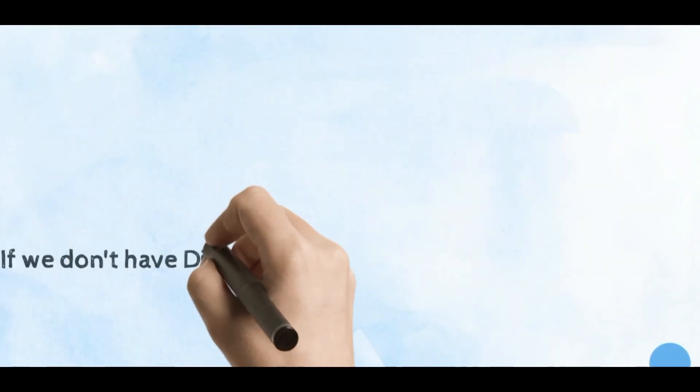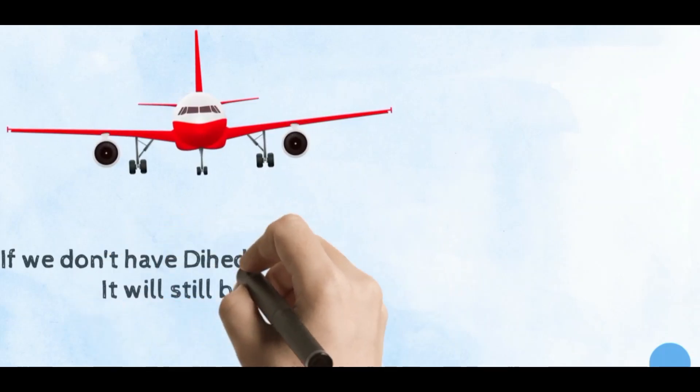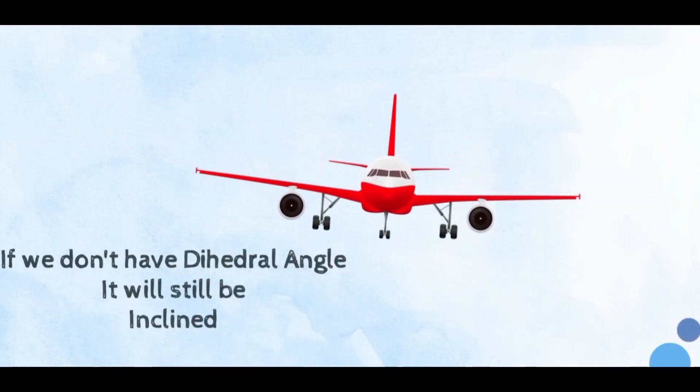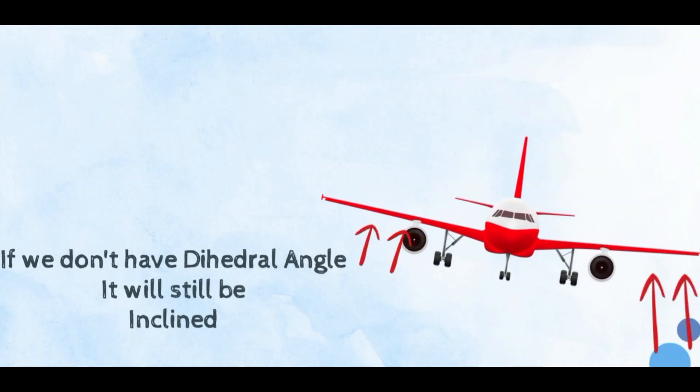Now if we don't have the dihedral angle, then the lift vector would still be inclined and would lead the aircraft to slip further until the pilot controls it.